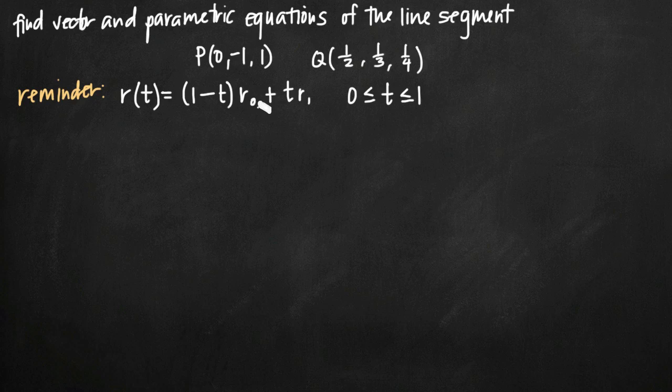This formula is only going to give us a vector equation where the parameter t is defined between 0 and 1. So t has to be greater than or equal to 0 and less than or equal to 1 for this vector equation formula to be true.